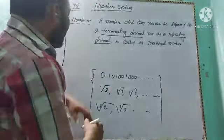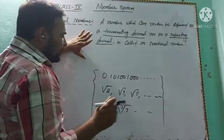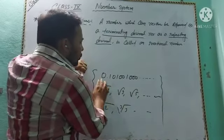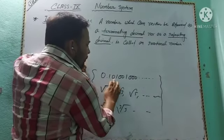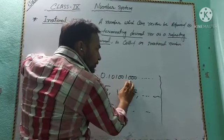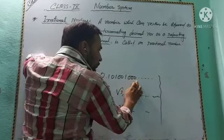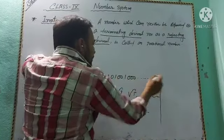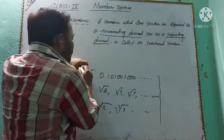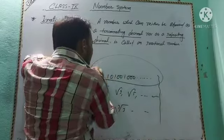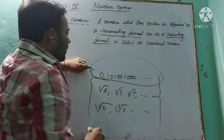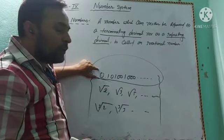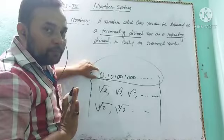Let's see from examples. Example: 0.1010010000... This number is neither a terminating nor a repeating decimal.